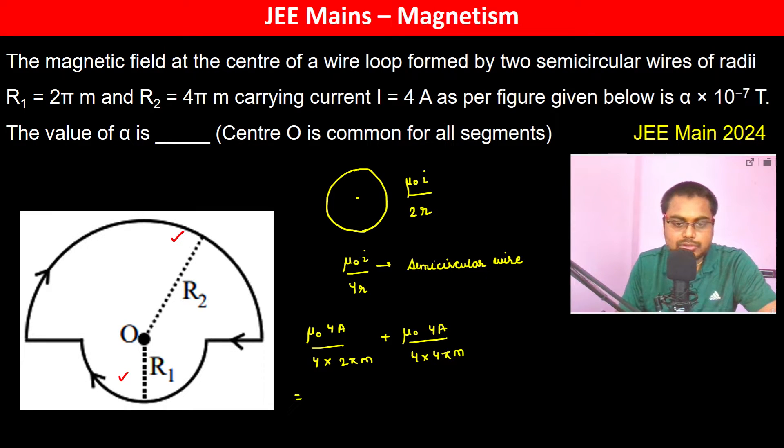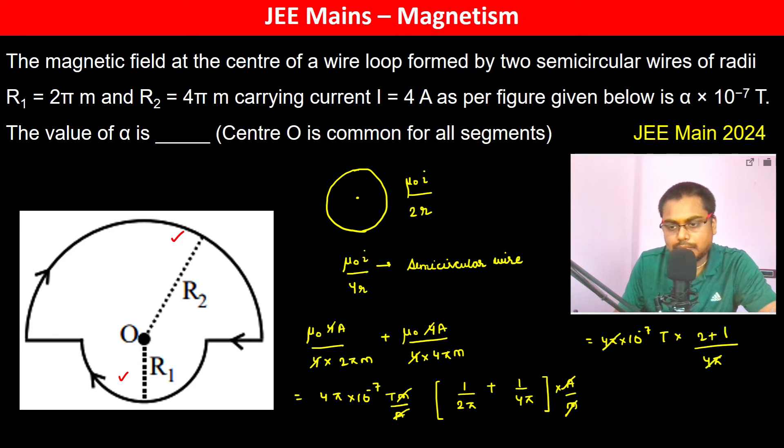So therefore this becomes, mu_0 is 4π × 10^-7 tesla meter per ampere into 1/(2π) plus 1/(4π), and this is ampere per meter. So this becomes 4π × 10^-7 tesla into, we have 4π, 2 plus 1, 4π, so this is 3 × 10^-7 tesla.